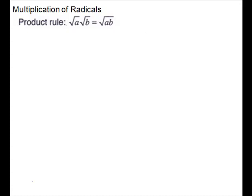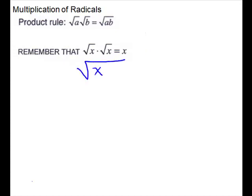Numbers on the outside of the radicals will multiply. Numbers on the inside of the radical will multiply together. Also recall that if you multiply the square root of something times the square root of itself, it's just going to take the radical off. This can save you some time. It would be square root of x times x, and so one goes outside the radical.